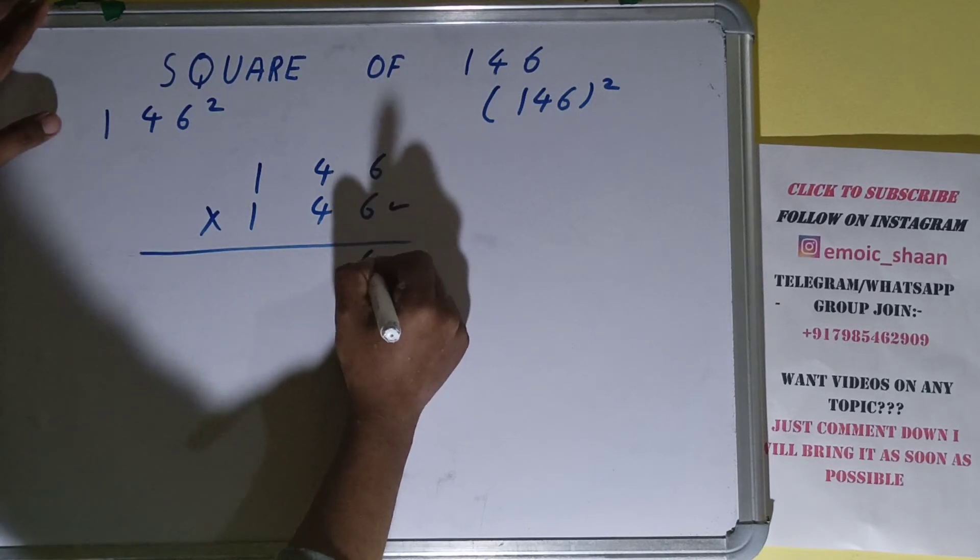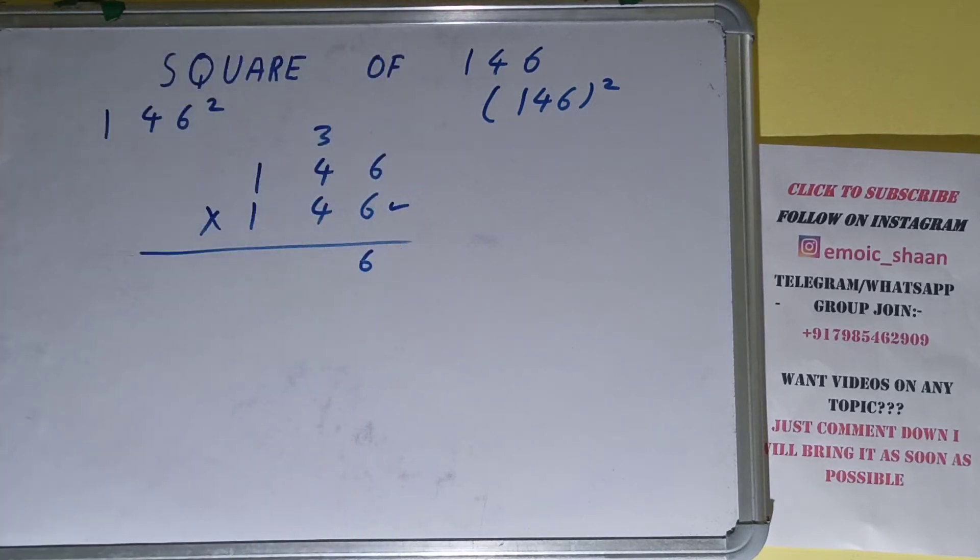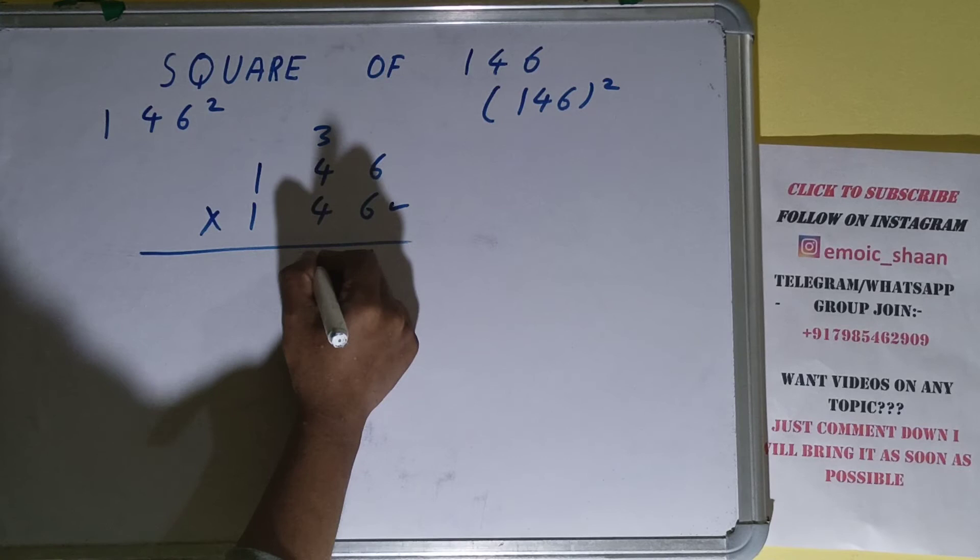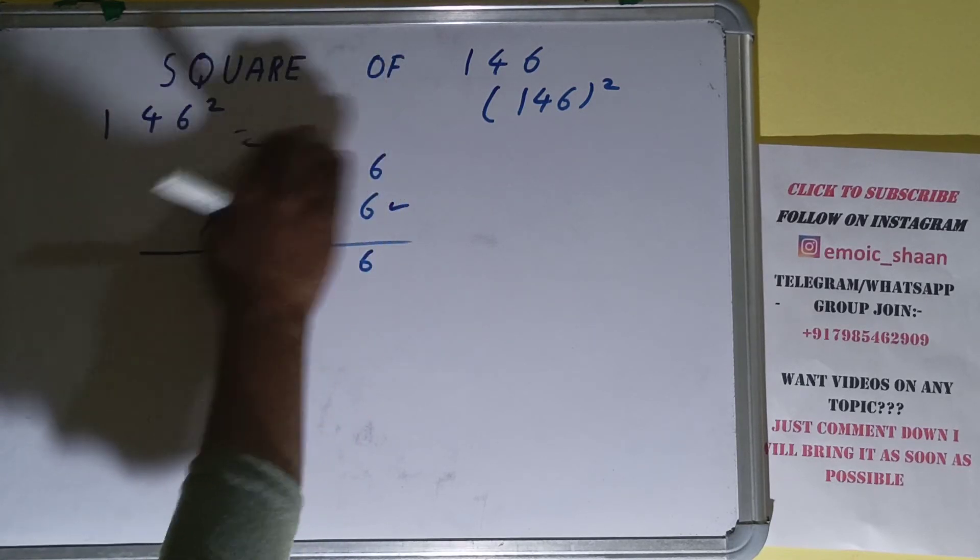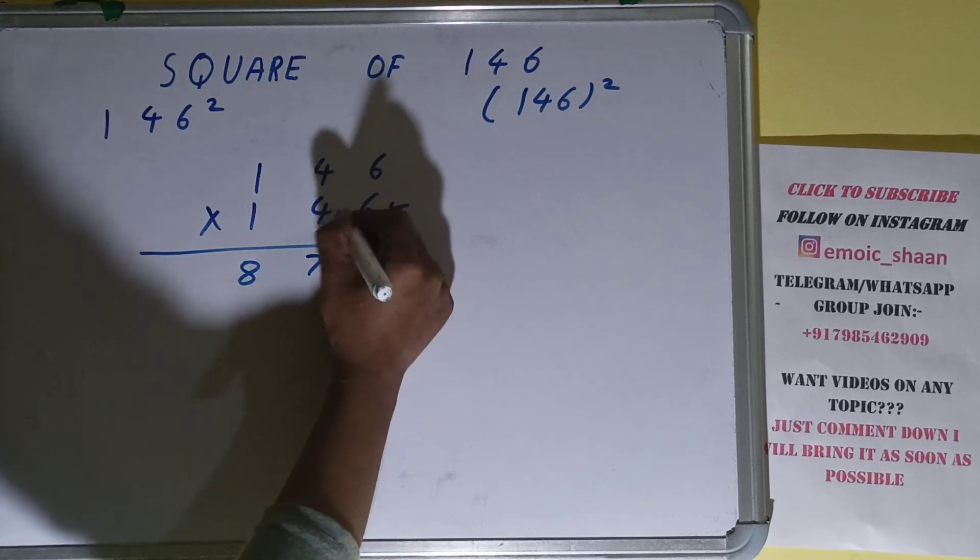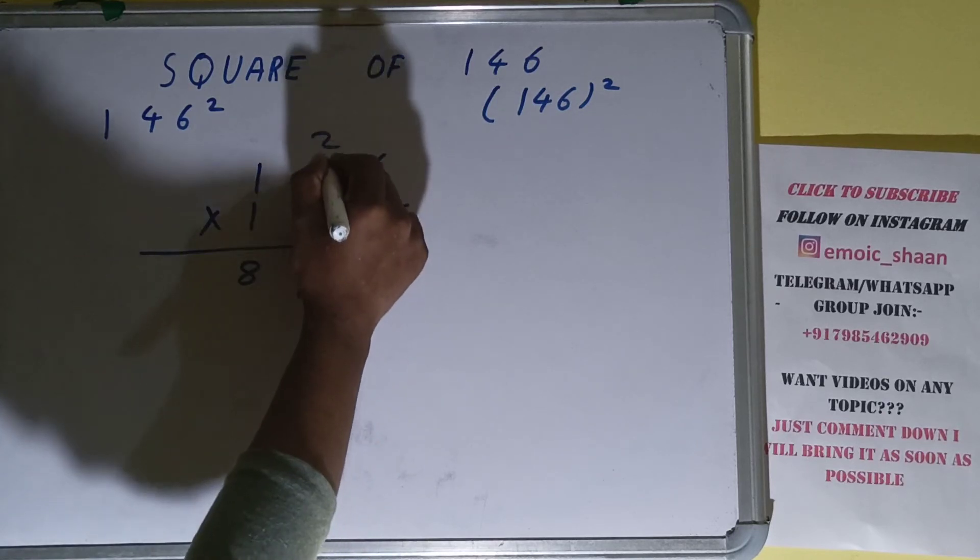6. Six times six are 36, six down, three carry. Six fours are 24 plus three is 27, two carry. Six times one is 6, plus two is 8. Now this 4: six times four is 24, four down, two carry. Four fours are 20